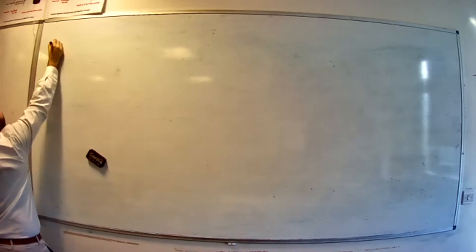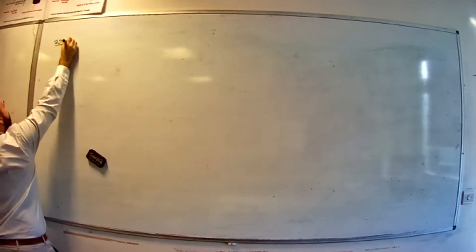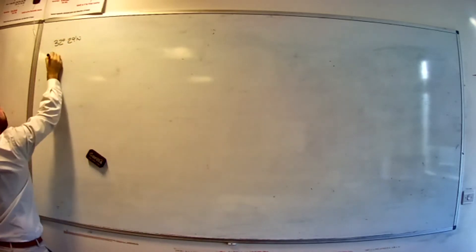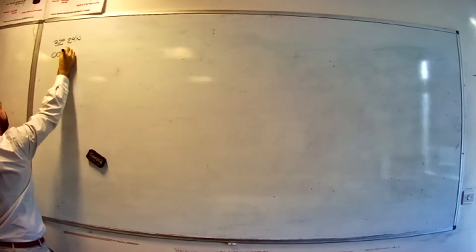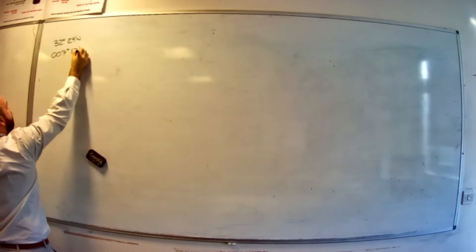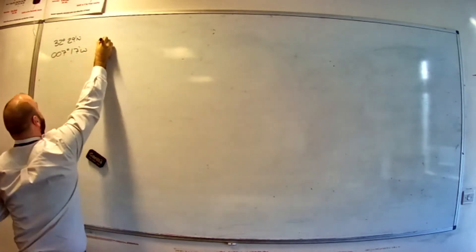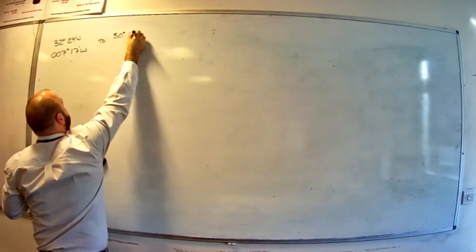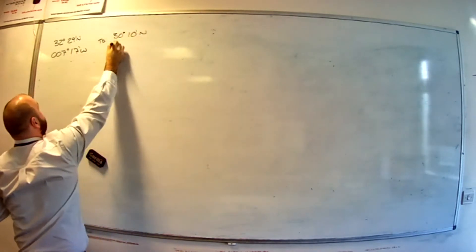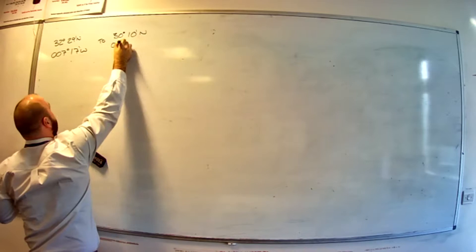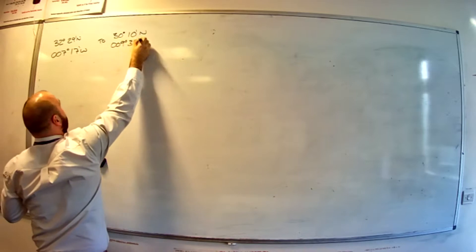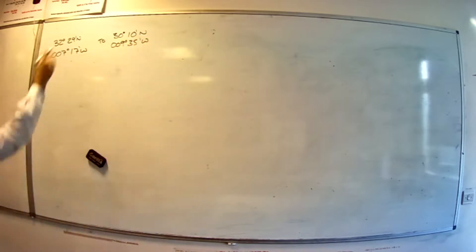So we're going to go from, let's make some numbers up, 32 degrees 29 minutes north, 007 degrees 17 minutes west. And we're going to go to 30 degrees 10 minutes north, 009 degrees 35 minutes west. From A to B.